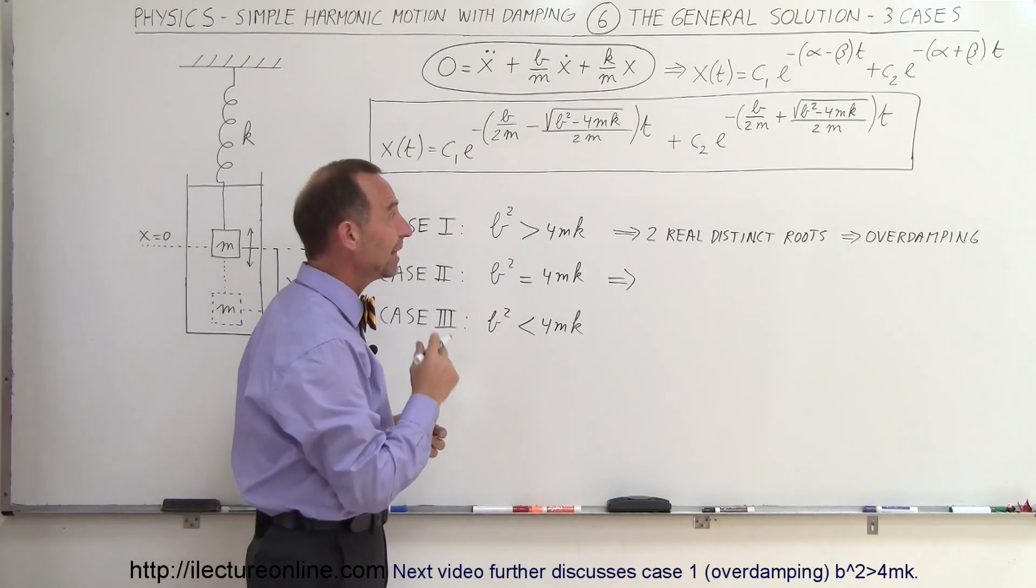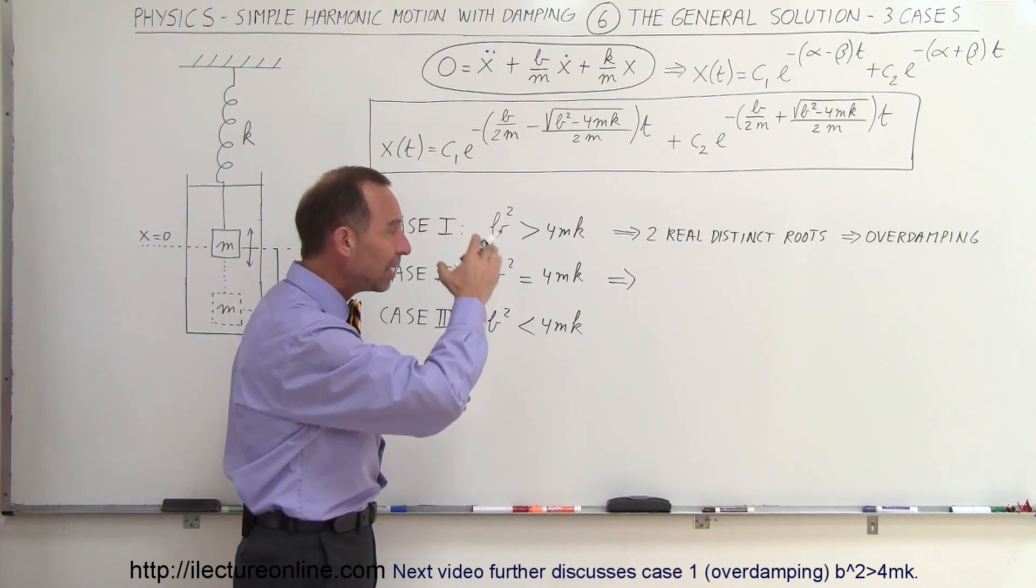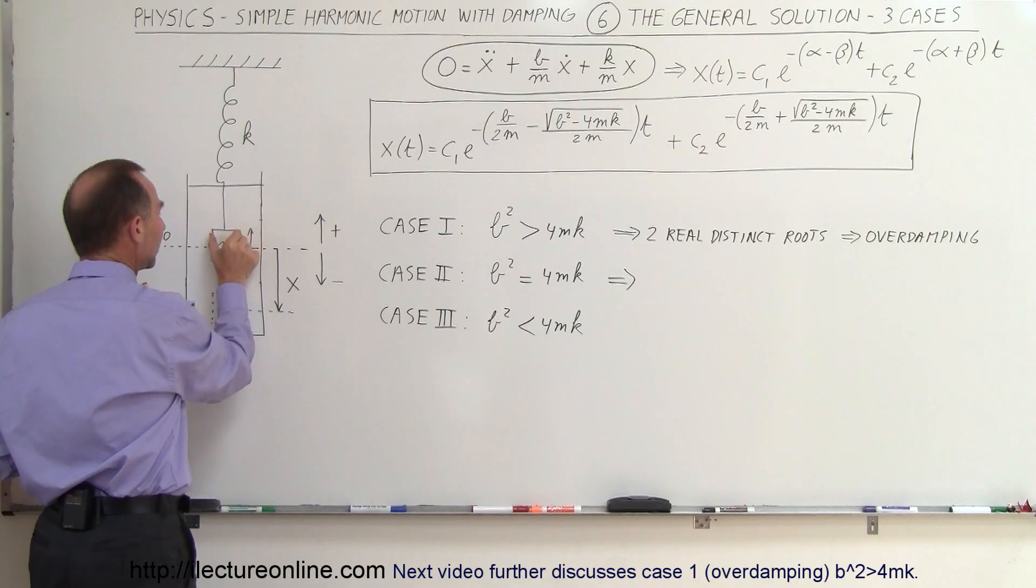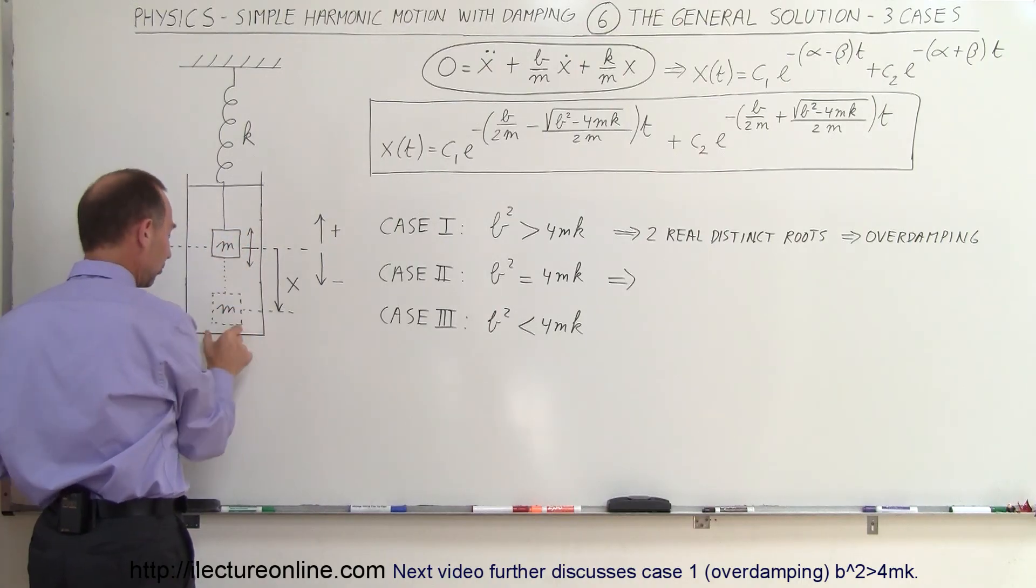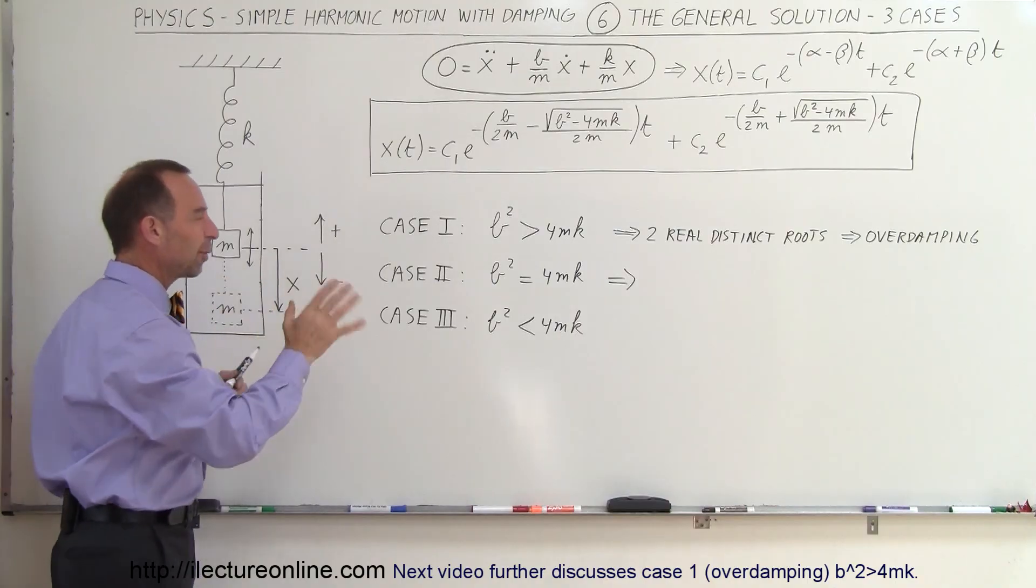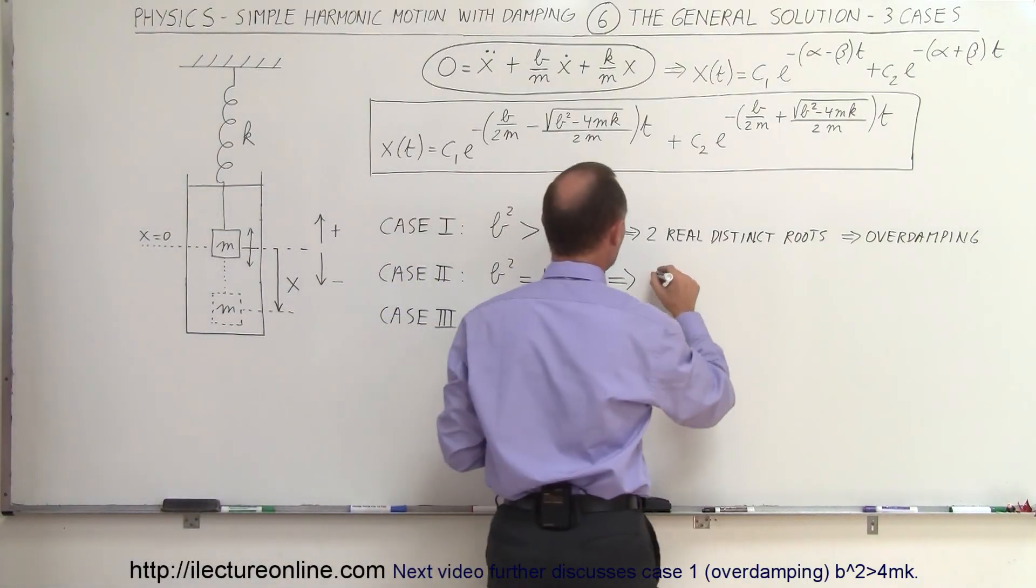It would be an exponential decaying system and it would decay just right. So in other words, if you displace it, it would go back to the equilibrium point and not overshoot. If you displace the other direction, it would go back to equilibrium point and not overshoot. So that's what we call critical damping. It has one real double root.